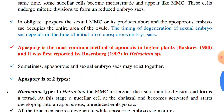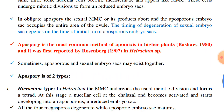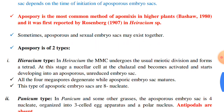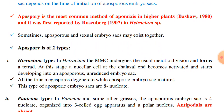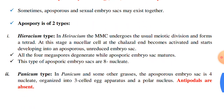Apospory is the most common method of apomyxis in higher plants and was first reported by Rosenberg in Hieracium species. Sometimes aposporous and sexual embryo sacs may exist together. Apospory is of two types.